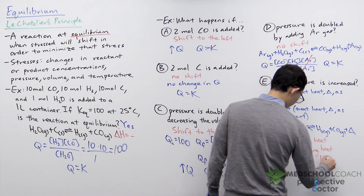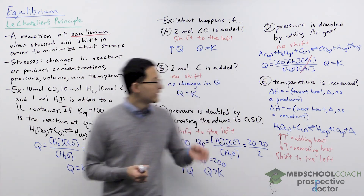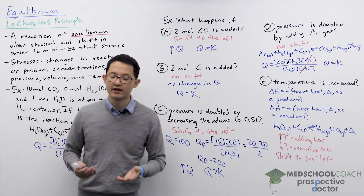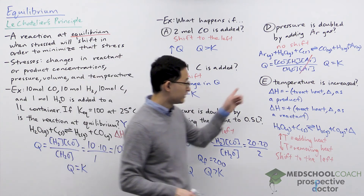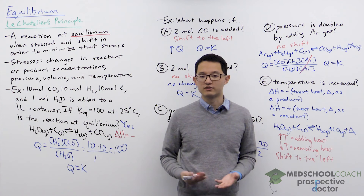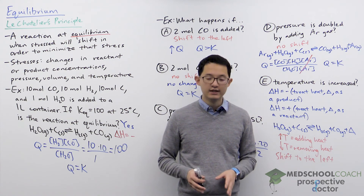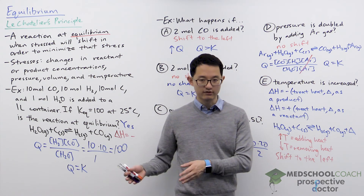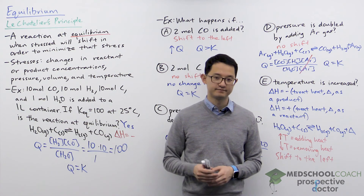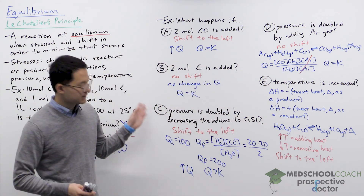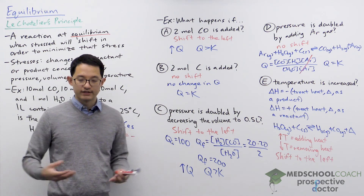One last thing: the temperature case is a little different from the others. In cases A and C, the reaction shifted because Q changed and was trying to return to K. When you change the temperature, it doesn't directly change Q — instead, the equilibrium constant K itself is dependent on temperature. So when temperature changes, K changes, and Q shifts to this new value of K. That is Le Chatelier's principle — keep these different examples in mind when encountering these types of problems on the MCAT.